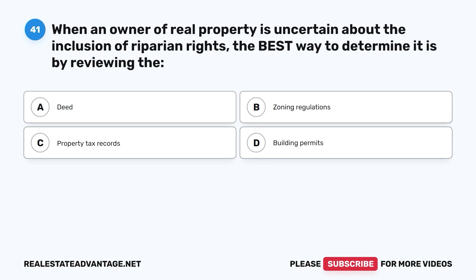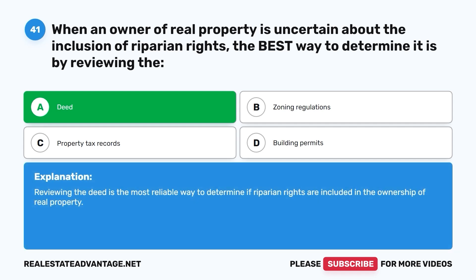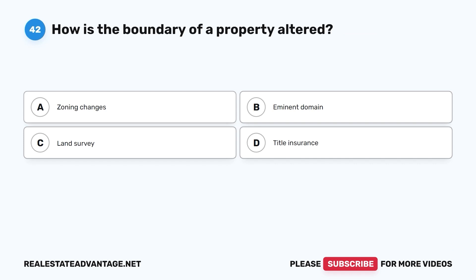Question 41: When an owner of real property is uncertain about the inclusion of riparian rights, the best way to determine it is by reviewing the: A. Deed. B. Zoning regulations. C. Property tax records. D. Building permits. The correct answer is A, deed. Reviewing the deed is the most reliable way to determine if riparian rights are included in the ownership of real property.